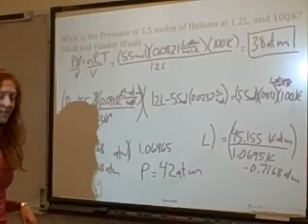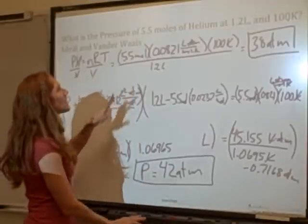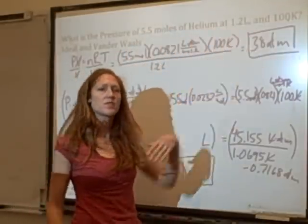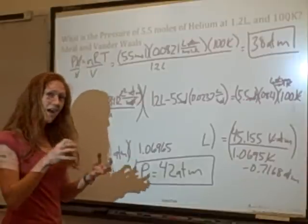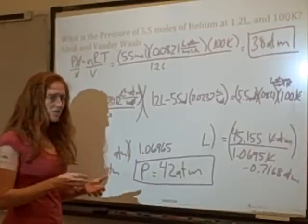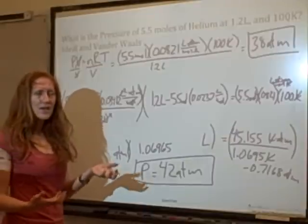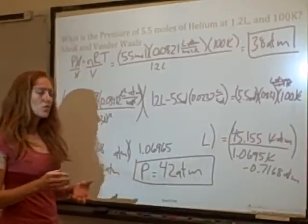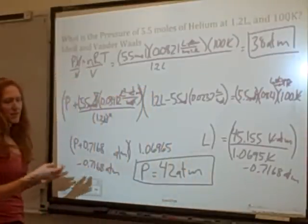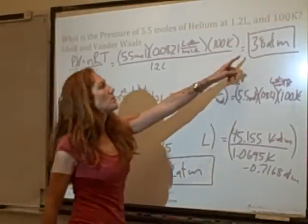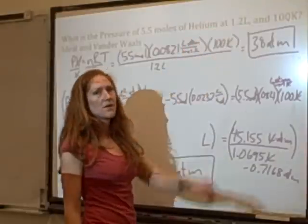This result makes sense — the answer differs from the ideal gas law because we have a very concentrated gas: 5.5 moles in only 1.2 liters instead of the standard 1 mole per 22.4 liters. At that high concentration the volume of each gas molecule starts to matter, and the particles are close enough to attract each other. The increased pressure from van der Waals reflects that the particle volume is significant here.